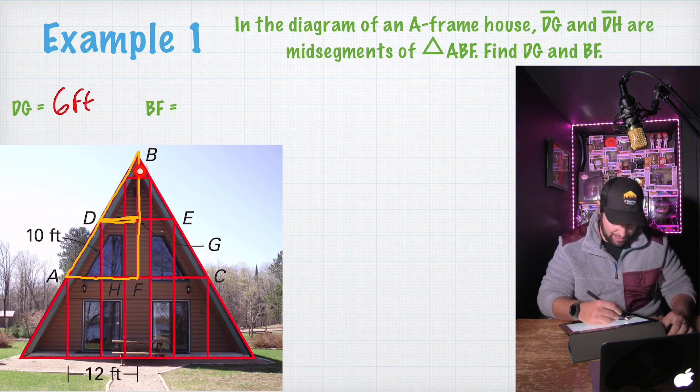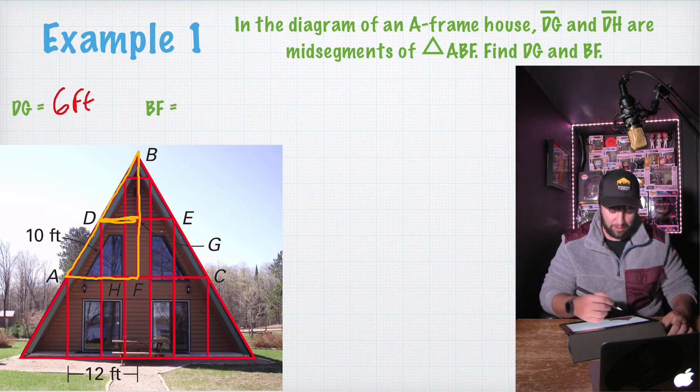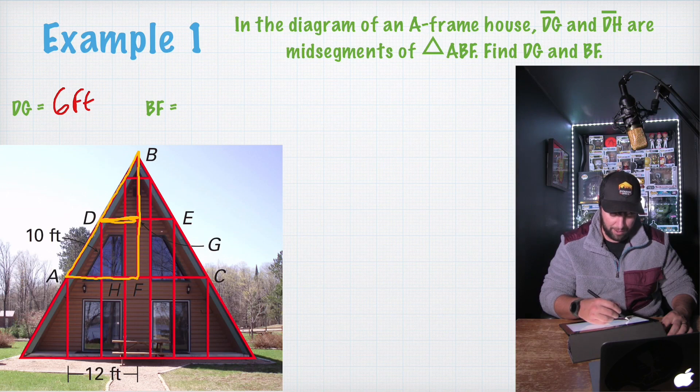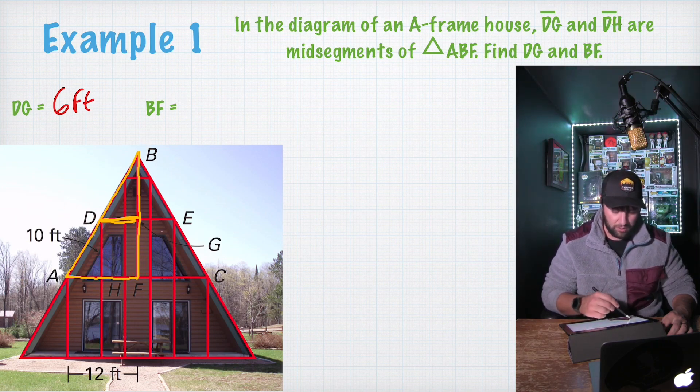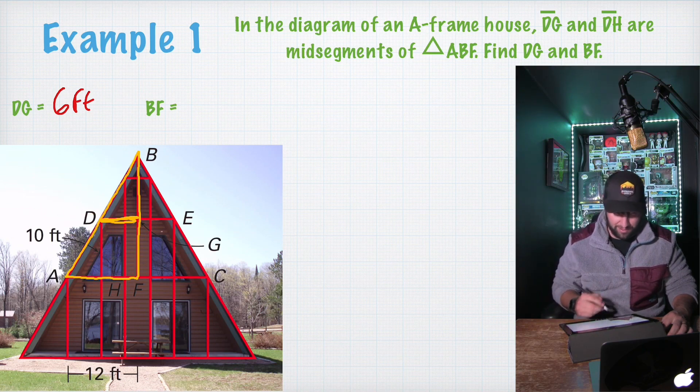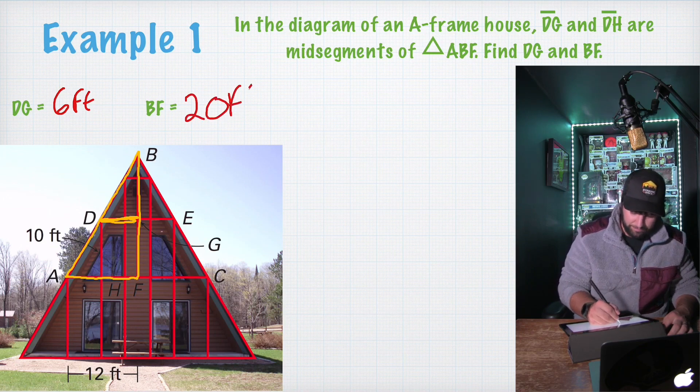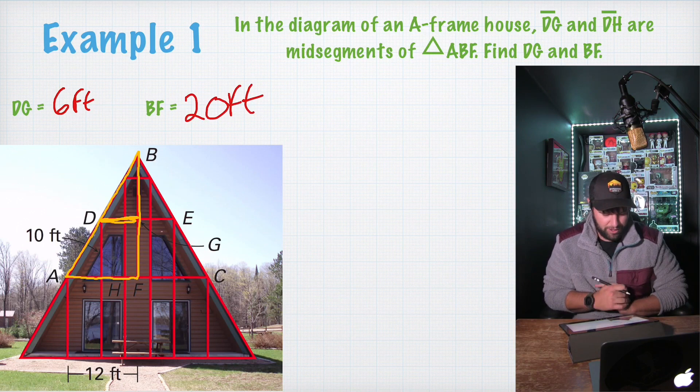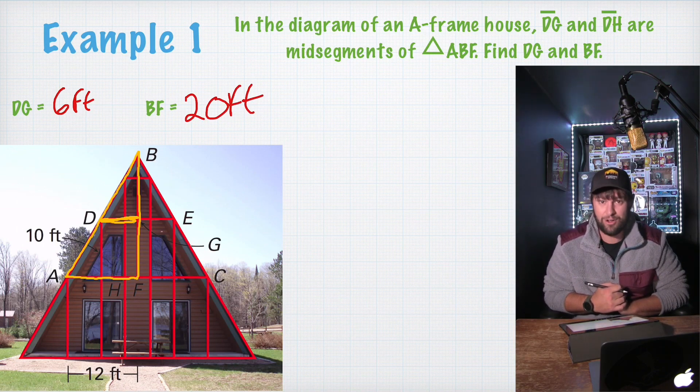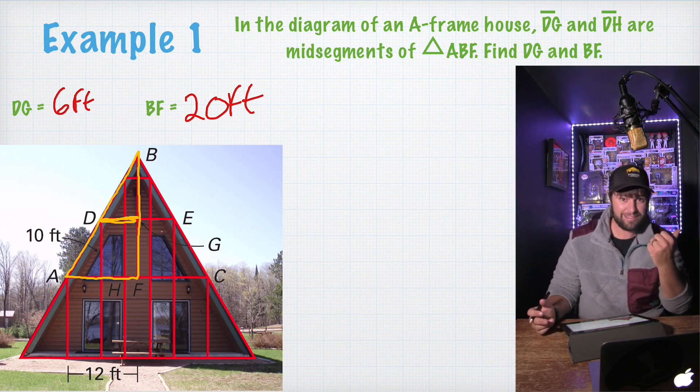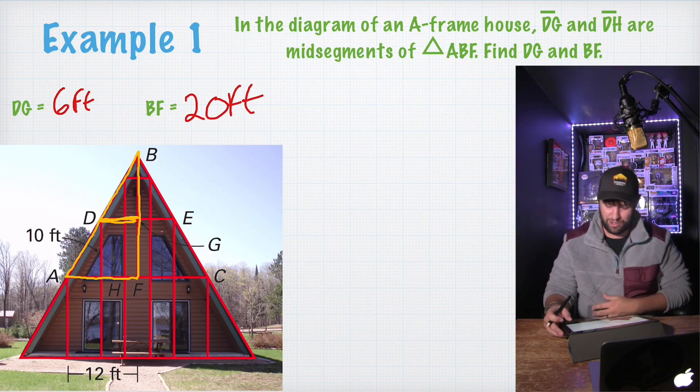So DG is parallel to AF. And if we follow these lines down right here, we know that AF is going to be 12 feet. So half of that would be six feet. DG is six feet. BF is the longer side. So to find it, we need to go to its mid-segment right here. DH is a mid-segment parallel to BF. And we know that DH is 10 feet. So DH is half of BF. So if we were to double this, we would have 20 feet. Hope that makes sense. Not a super hard example. Just got to know what a mid-segment is and its properties.